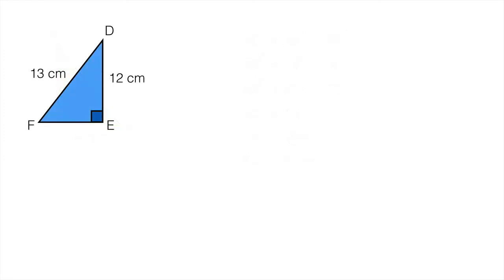On to another example. This time we need to find the length EF. So we start with EF² being equal to the hypotenuse which is DF² minus the other side which is DE². We now pop in the values. Well DF is 13 and DE is 12.